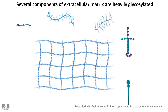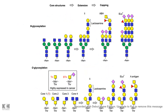O-linked glycosylation happens in a sequential manner. You have a core structure, onto that it gets extended, and you get capping. In the case of O-linked glycosylation, the core structure is fairly simple. On top of that, several glycosyl transferase enzymes transfer specific residues, and you could have a wide variety of variations. So O-linked glycosylation variety is way more than N-linked glycosylation variety, and each of these different modifications can lead to different biological functions.